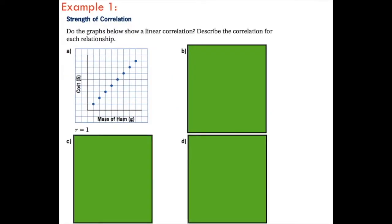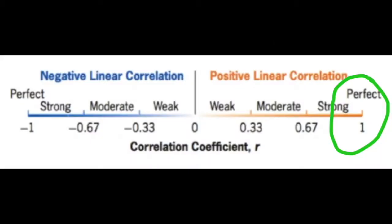Looking at this first example, talking about mass of ham and the cost, this has a correlation coefficient of one. As you can see on the graph, as the mass of the ham increases, the cost also increases by a proportional amount. It looks like this has a slope of one. This is an example of a perfect positive correlation because it's got a correlation coefficient of one.